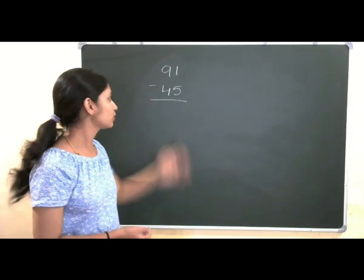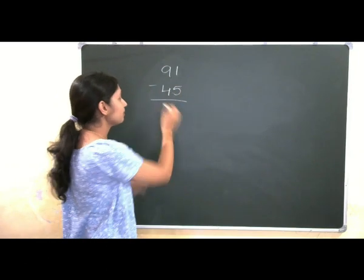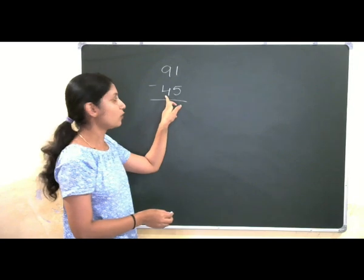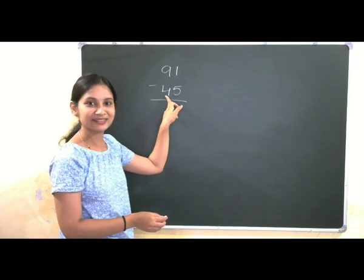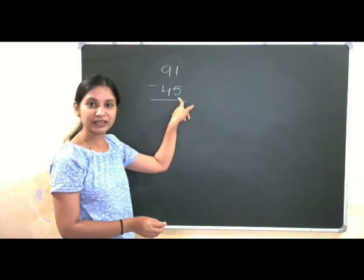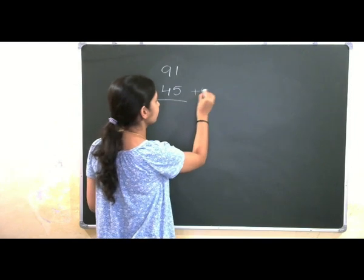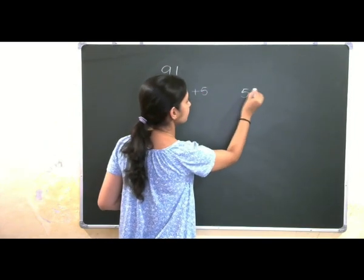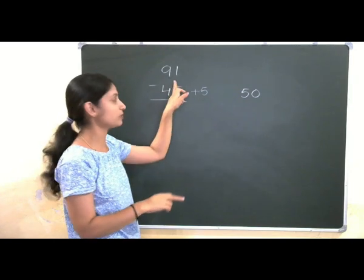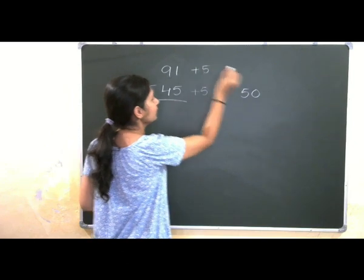Now, we are using one trick to solve this subtraction problem. First, I will round up this to nearest multiple of 10. What you will do? You will add, yes, 5. That means for 45, 50 is the nearest multiple of 10. So, I will add plus 5. Then it becomes 50. Here I need to add 5 because there should be no change in the value. So, 91 plus 5 gives you 96.